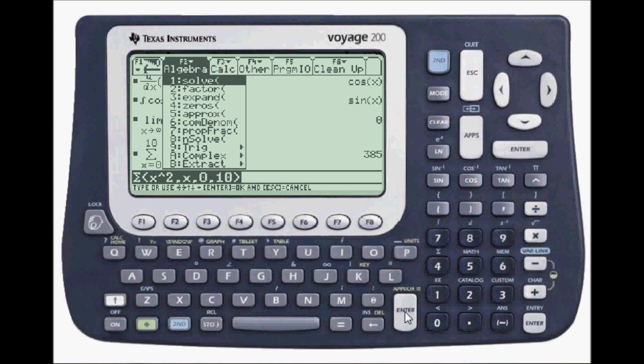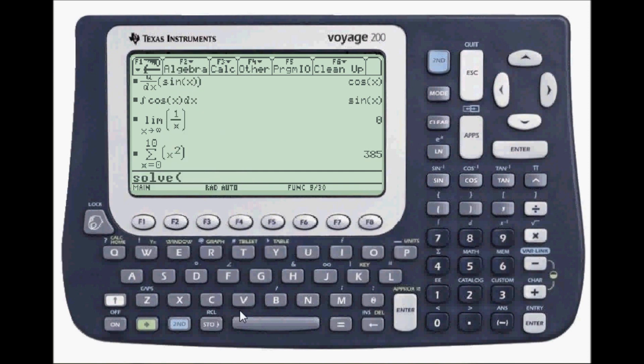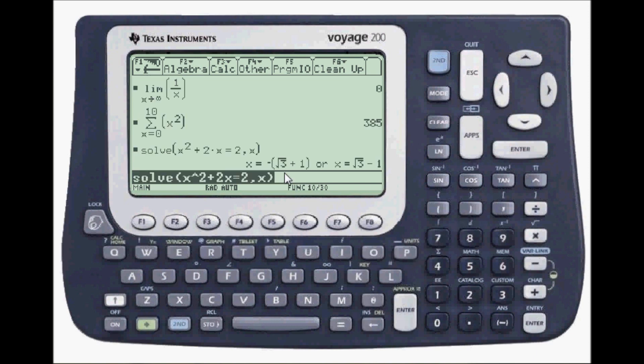I'm going to go to F2. And let's do the ubiquitous solve. So x squared, plus two x, is equal to two. And x is my variable. Press enter. And here are the two solutions for x.